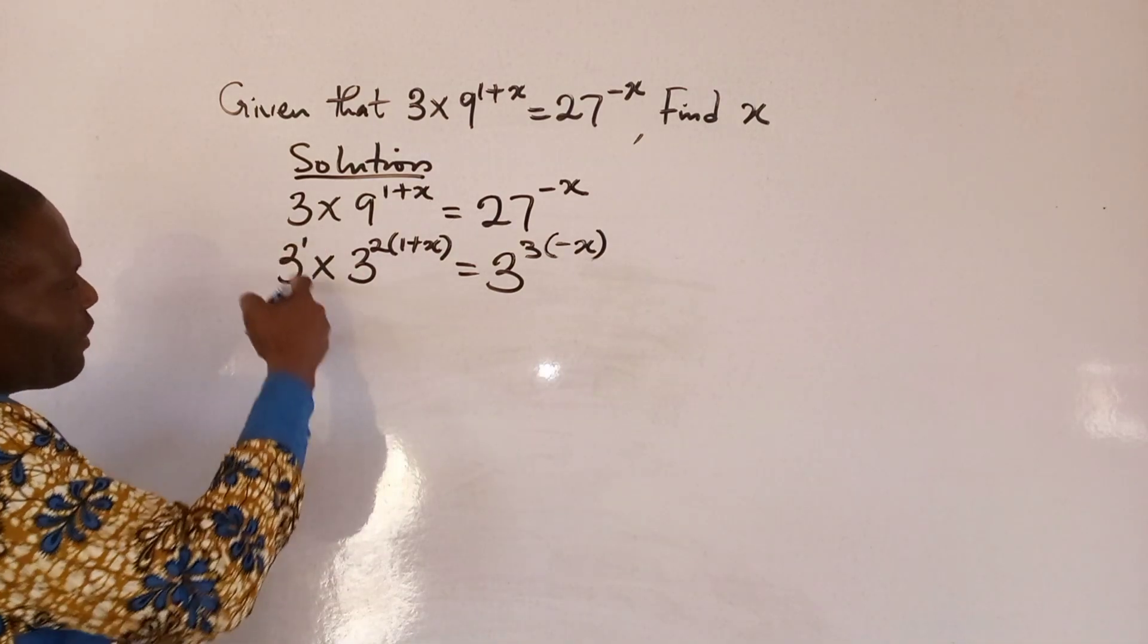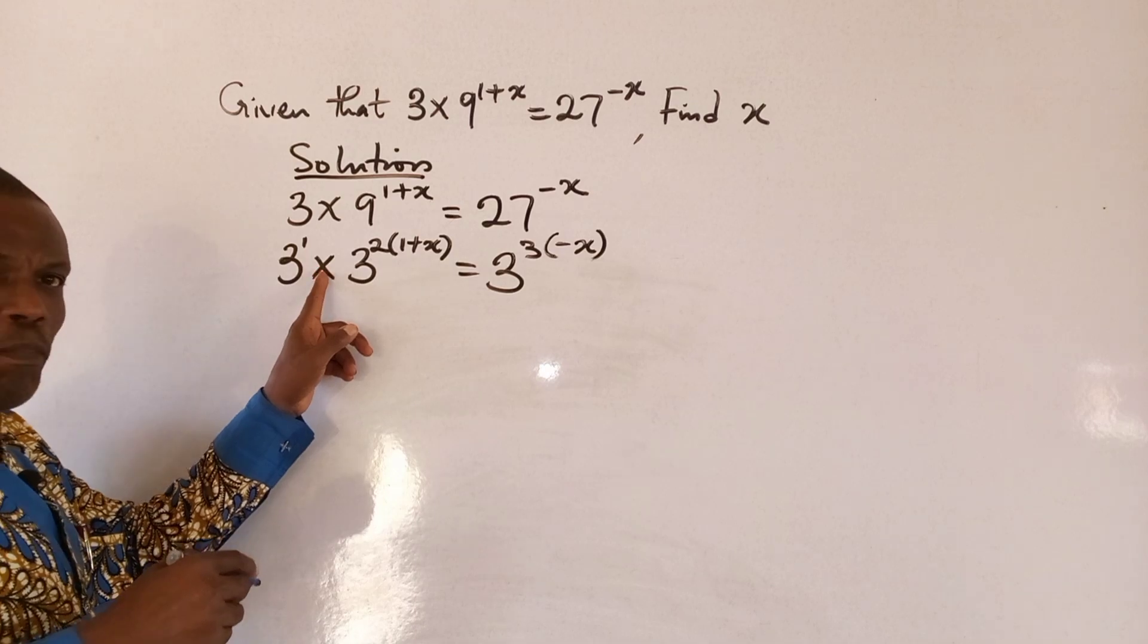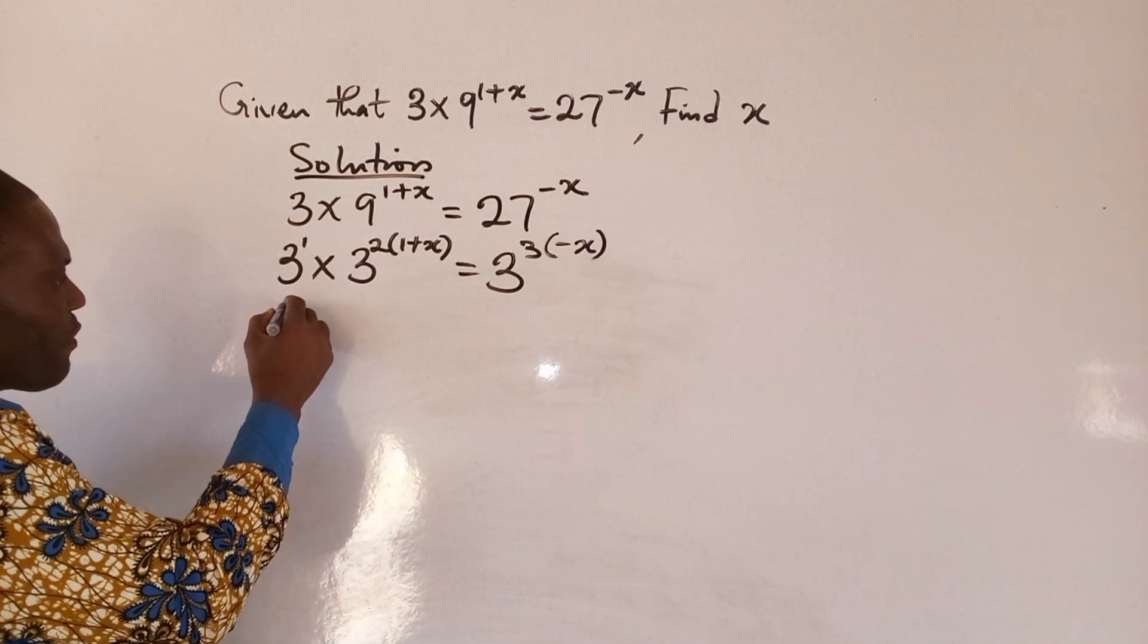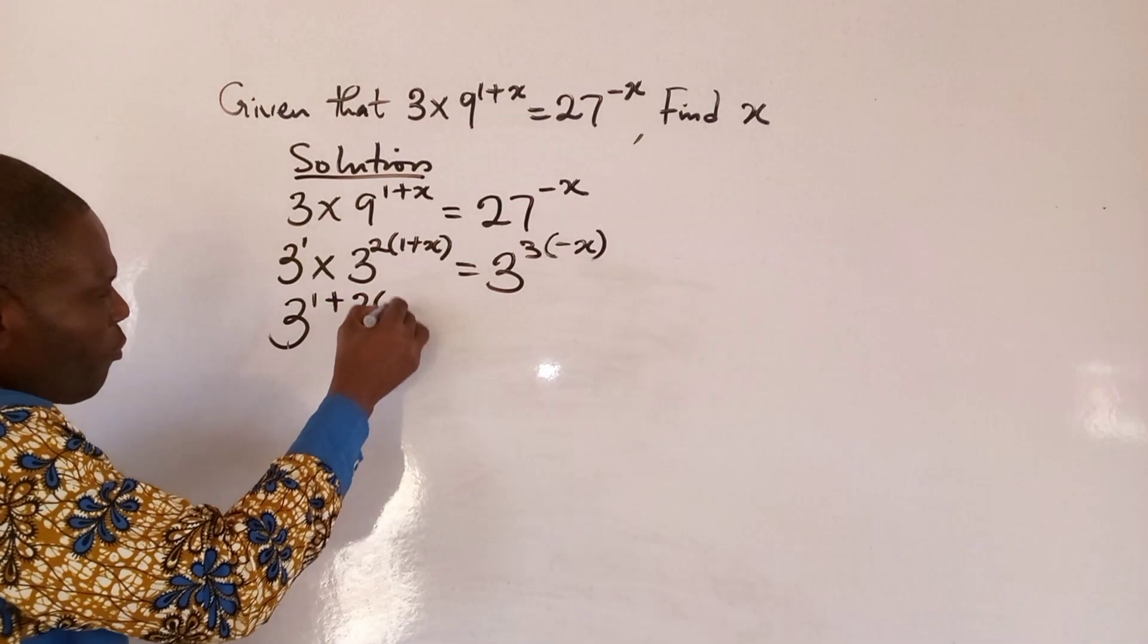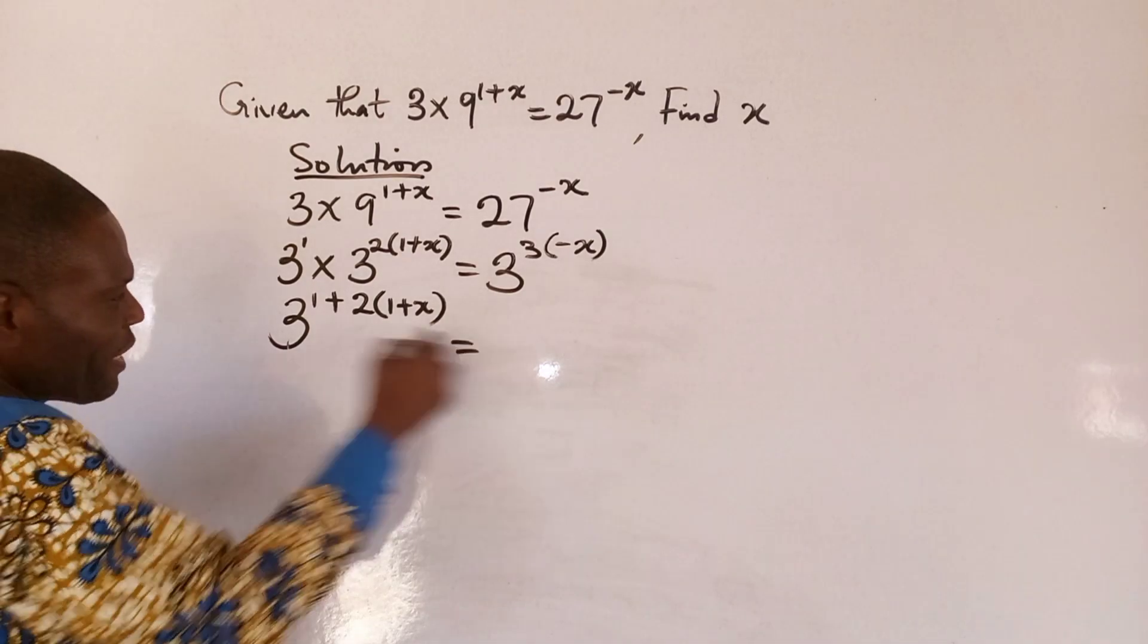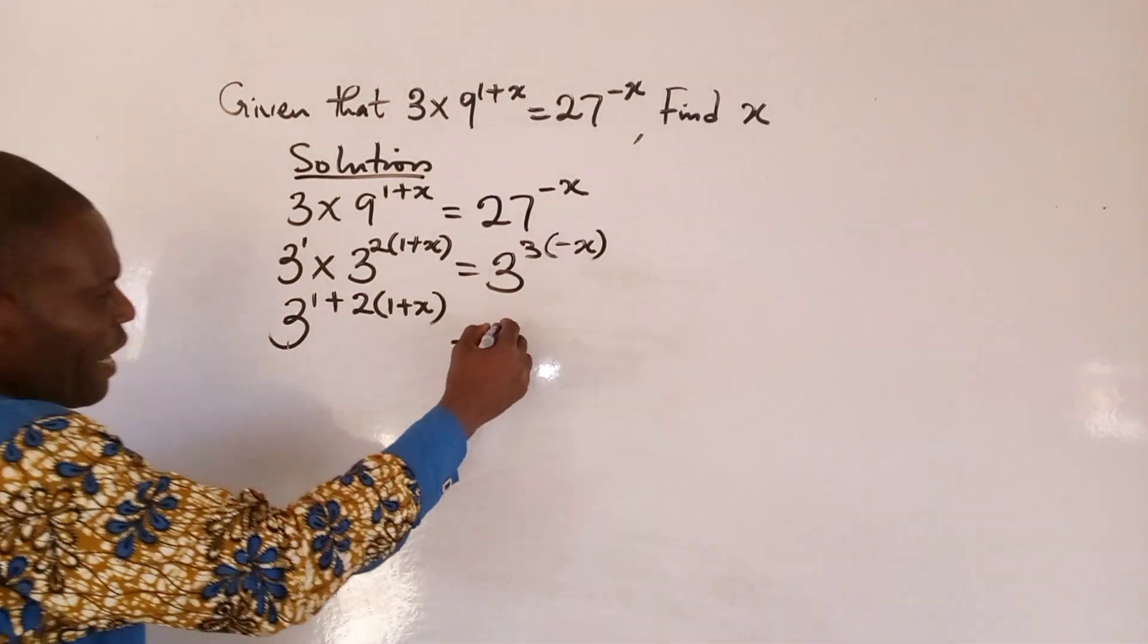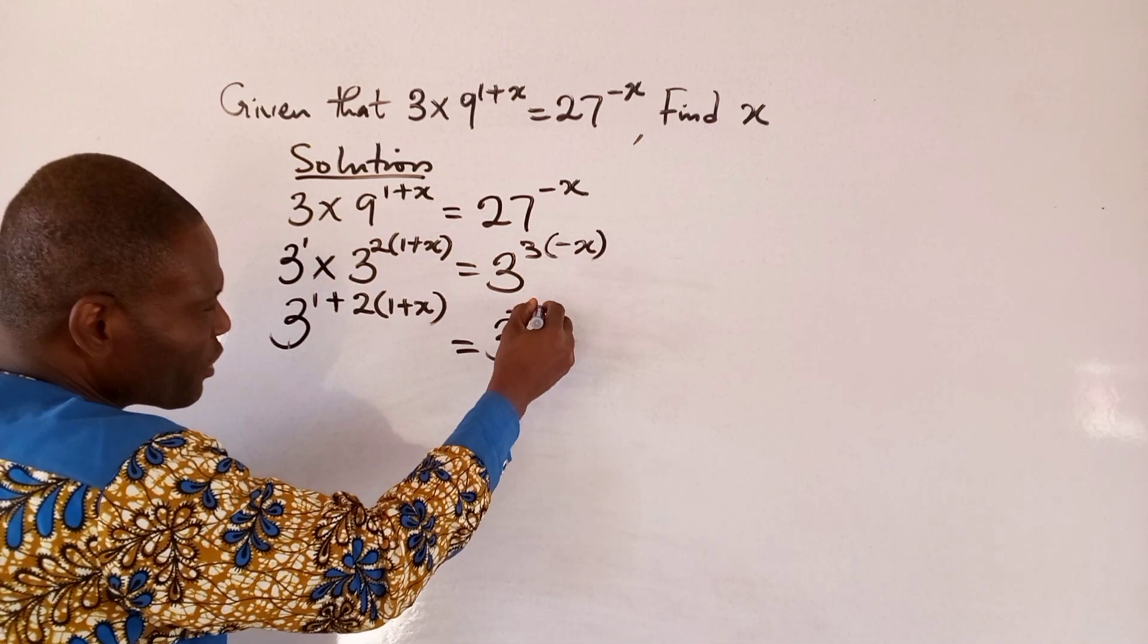So, at this point, we're going to use the law of indices. And the law of indices says that when its multiplication is plus, so we have 3, 1 plus 2, open bracket 1 plus x. Here, we have the same base, so we take it 1. So, we take 1 of these base, so we have 3 raised to power 3, and multiply this, we have minus 3x.